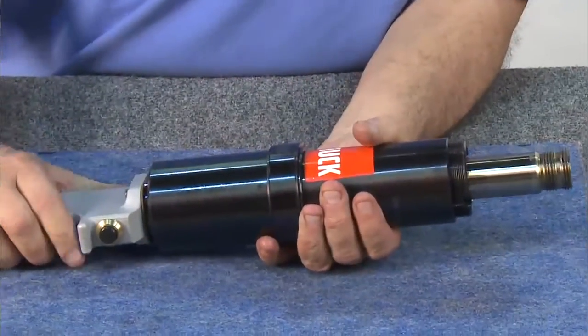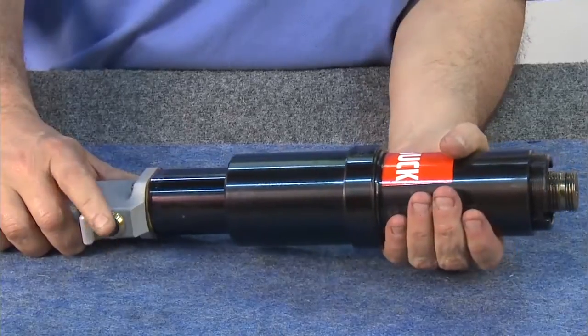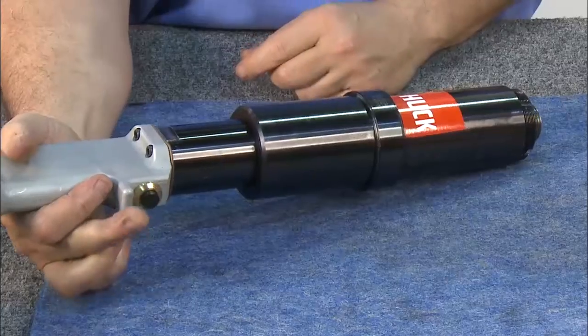Now the tool is ready to be tested. First, inspect the tool for any leaks. Start by cycling the piston a few times. Inspect the front and the back for leaks.